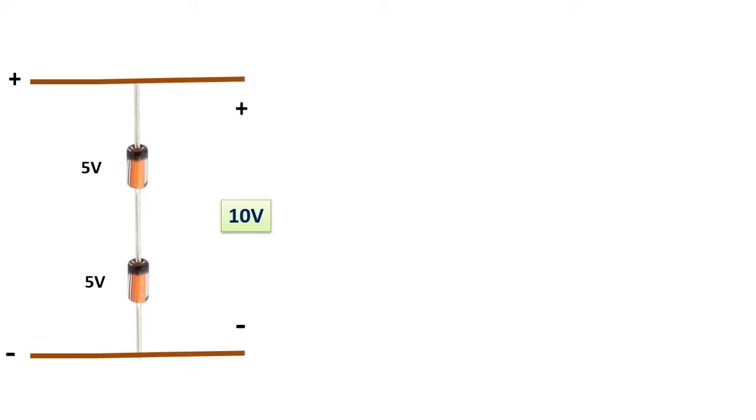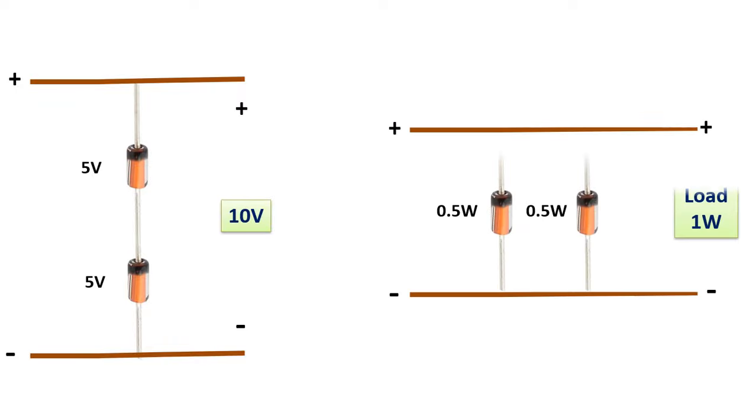When we connect the Zener diodes in series, we can increase the regulation voltage. For example, when we connect two Zener diodes with a braking voltage of 5 volts in series, we can obtain a regulation voltage of 10 volts. And similarly, we can increase the power when we connect Zener diodes in parallel. For example, when we connect two 0.5 watt Zener diodes in parallel, we can provide a constant voltage to a 1 watt load.